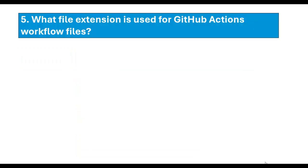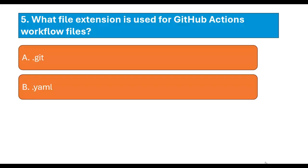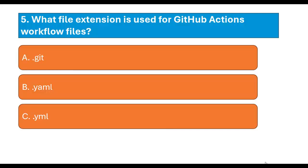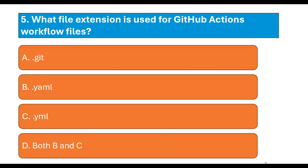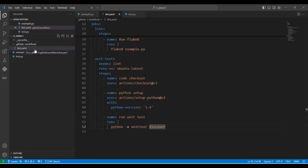Question number 5: What file extension is used for GitHub Actions workflow files? Option A: .git. Option B: .yaml. Option C: .yml. Option D: Both B and C. The correct answer is Option D — both .yaml and .yml are valid extensions for CI configuration files. In VS Code you can see our CI configuration file named 'lint.yml' with the yml extension, but the .yaml extension is equally valid.